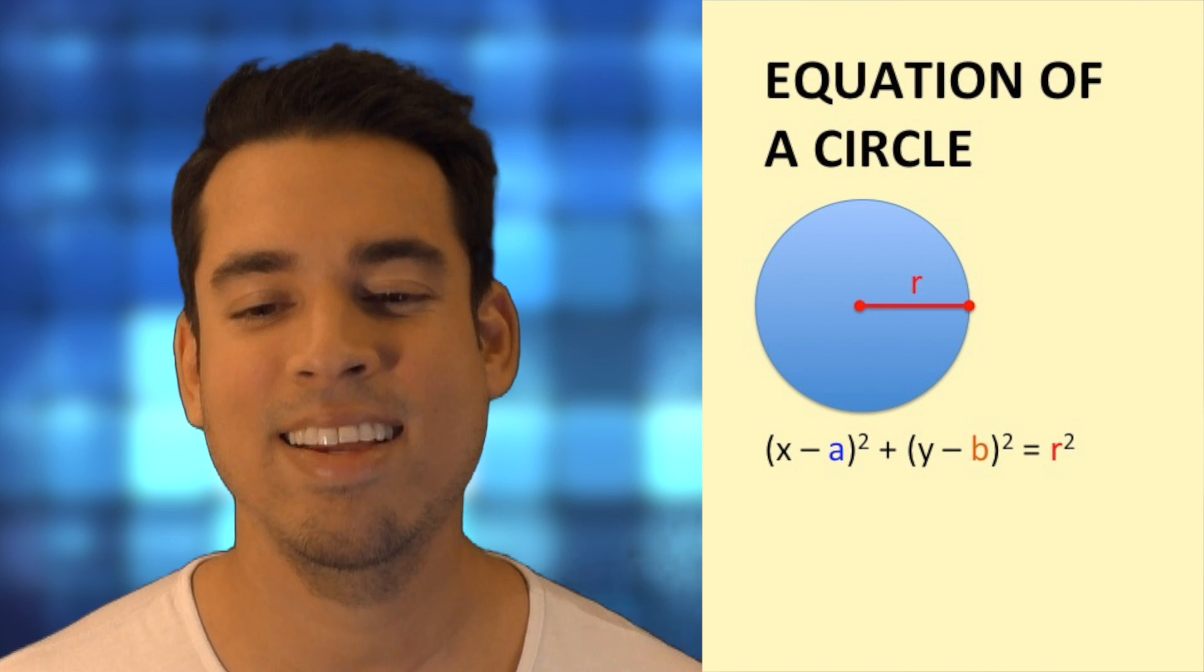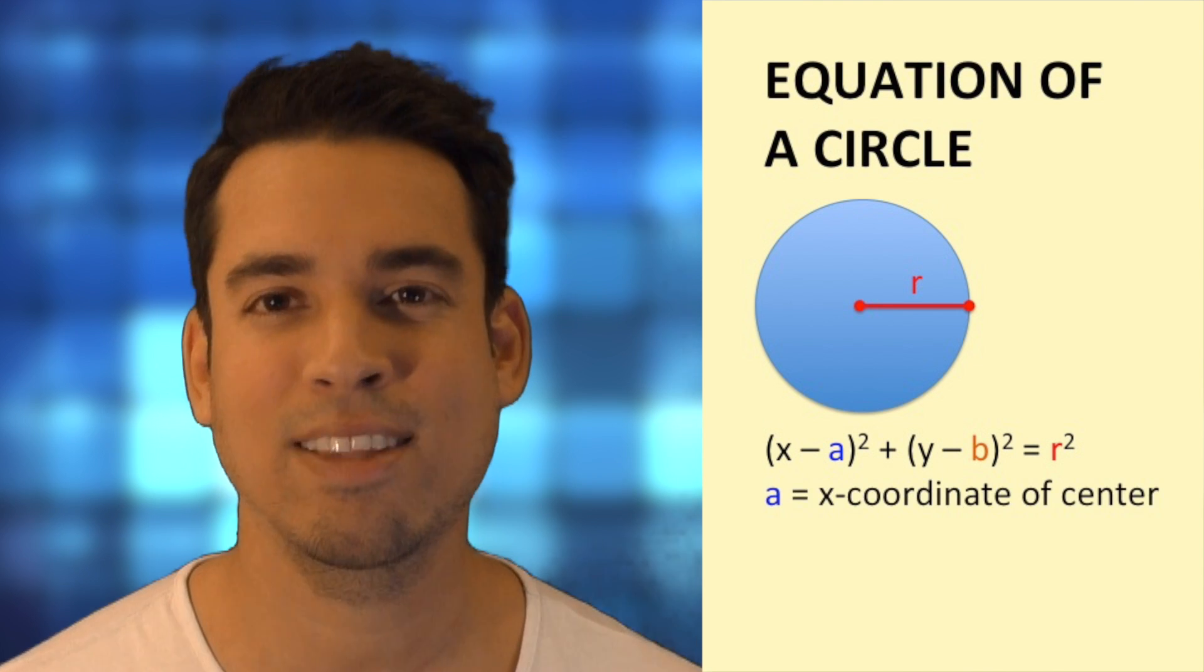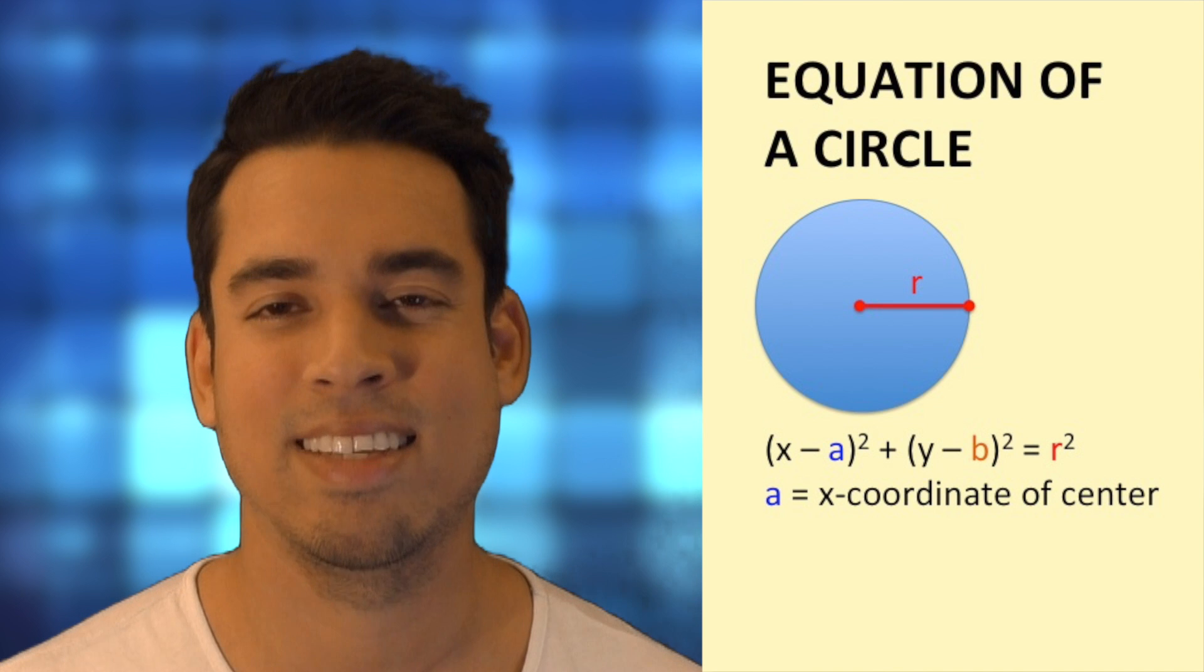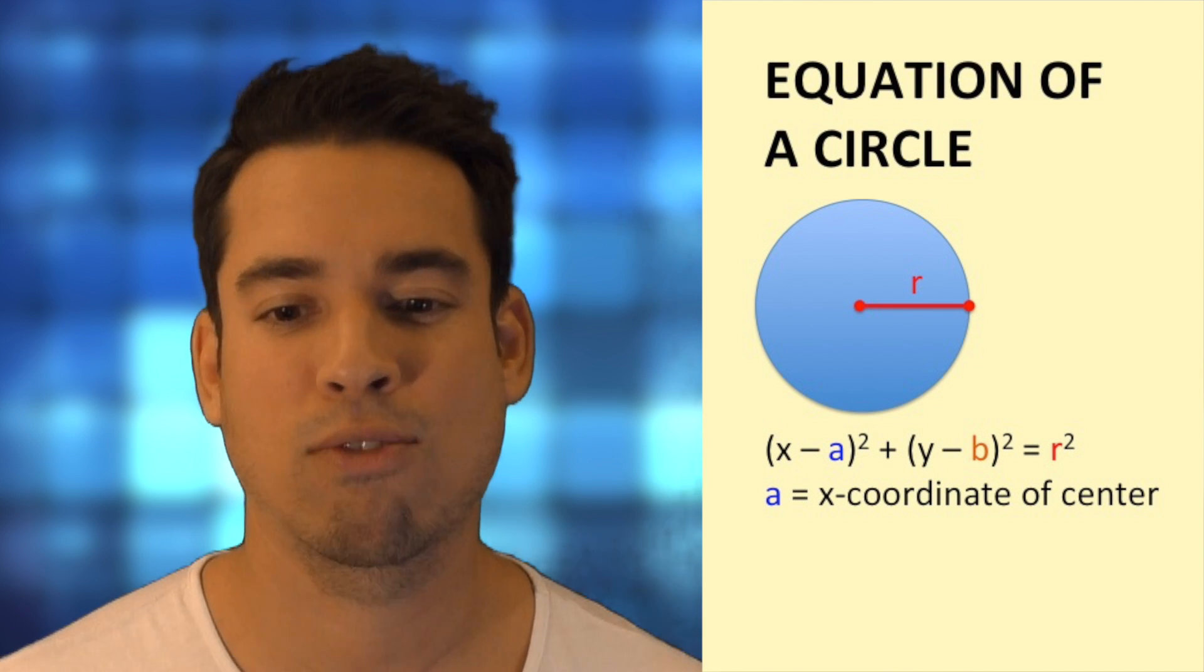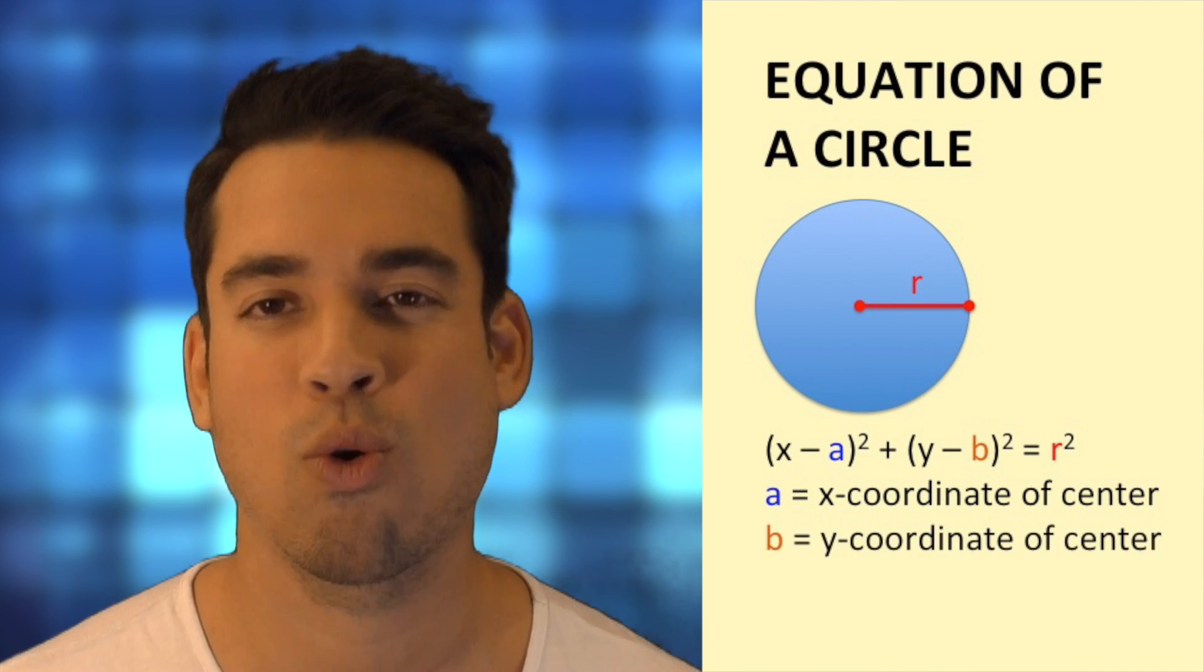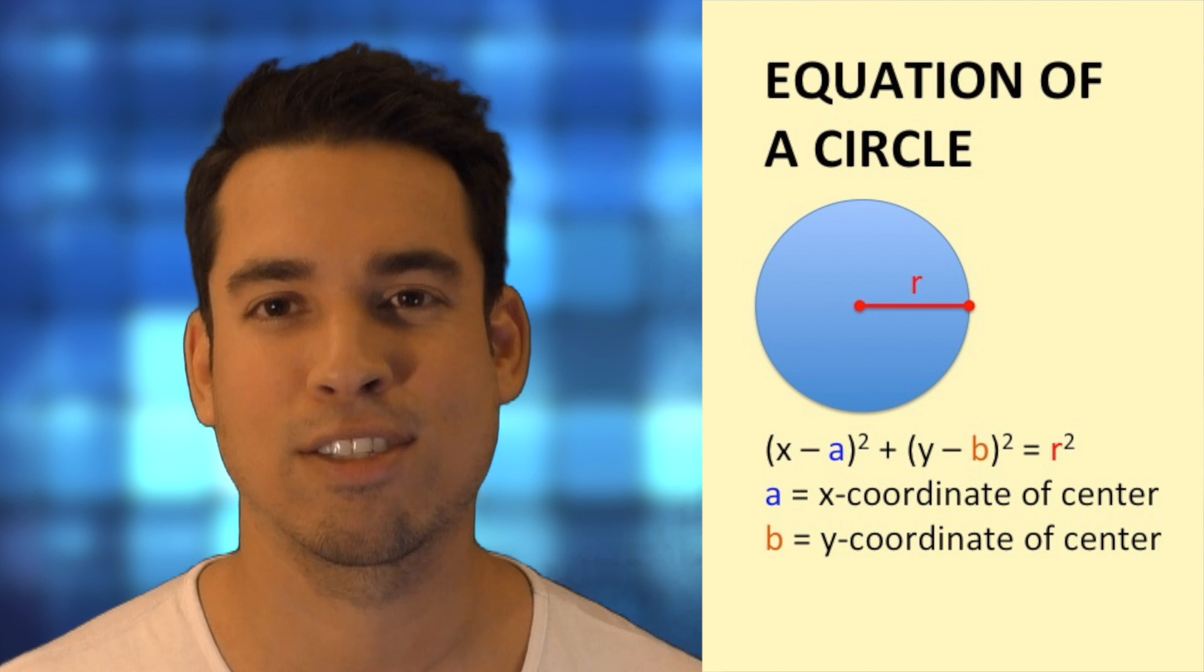So what is a? a is the x coordinate of the center of the circle, so on this xy plane x is the x coordinate of the center, and of course b is our y coordinate of the center of this circle.